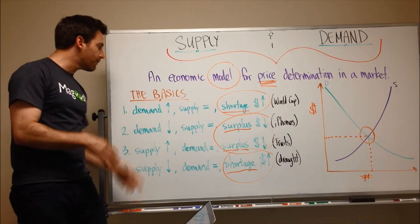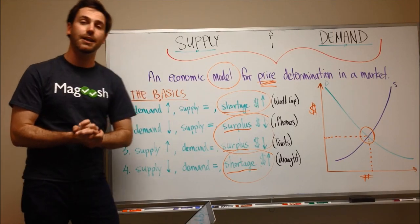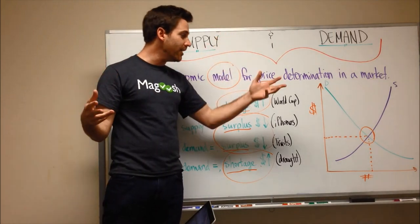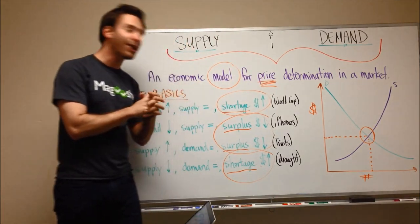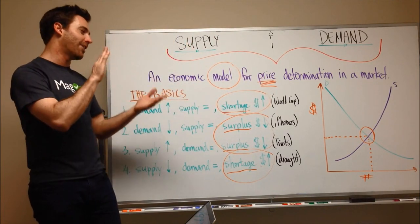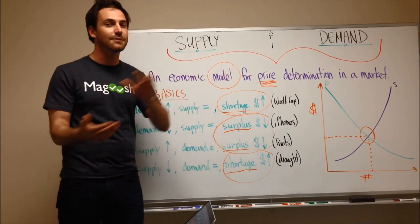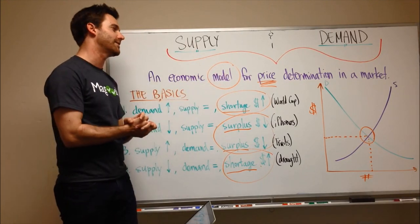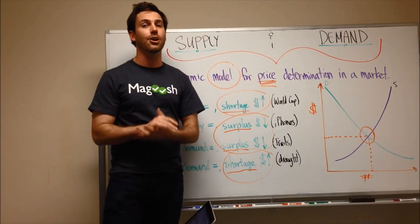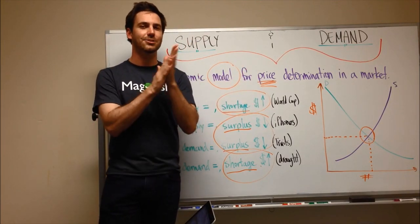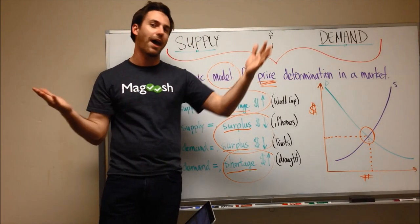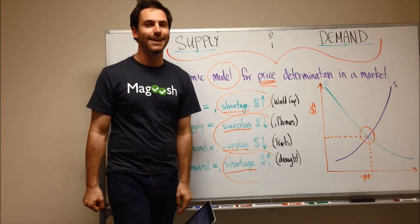Great. So those are the four basic concepts of supply and demand. Again, this is a very complex concept and requires a lot more study than just this video, but hopefully this gives you some understanding of these concepts so they're not super foreign and they're not too hard to understand and wrap your mind around when you're reading a passage or argument in the GMAT.